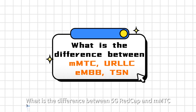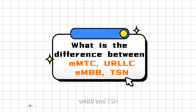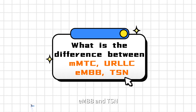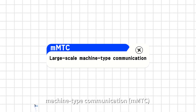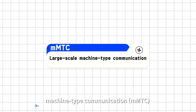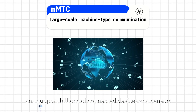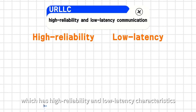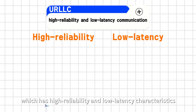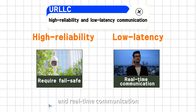What is the difference between 5G REDCap and MMTC, URLLC, EMBB, and TSN? 5G IoT application cases that support large-scale machine-type communication, MMTC, support billions of connected devices and sensors. It adopts high reliability and low latency communication, URLLC, which has high reliability and low latency characteristics, and is suitable for applications that require failsafe and real-time communication.